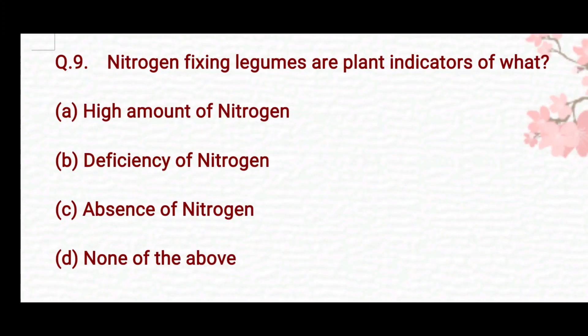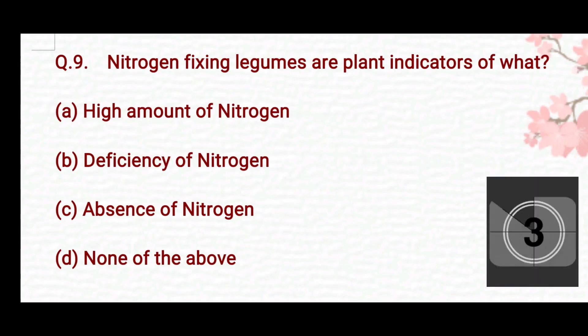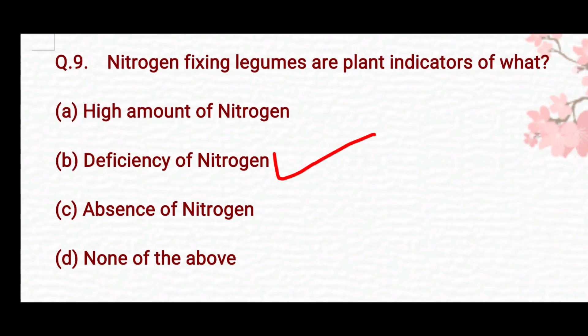Nitrogen fixing legumes are plant indicators of what? Option A: high amount of nitrogen. Option B: deficiency of nitrogen. Option C: absence of nitrogen. Option D: none of the above. The right answer is Option B — deficiency of nitrogen.